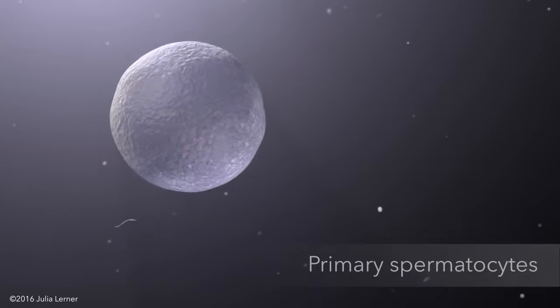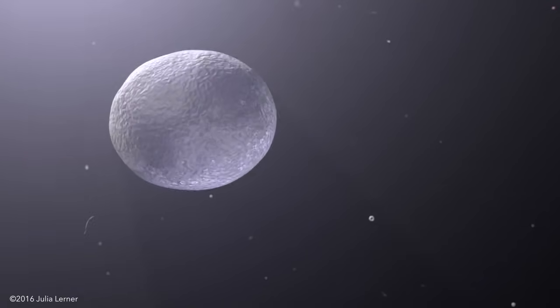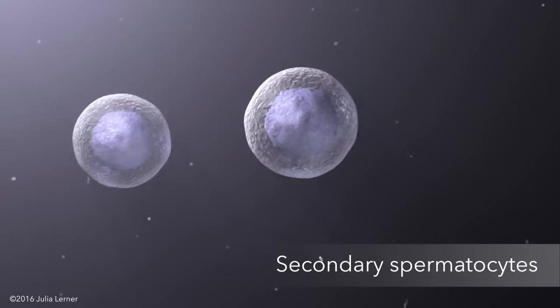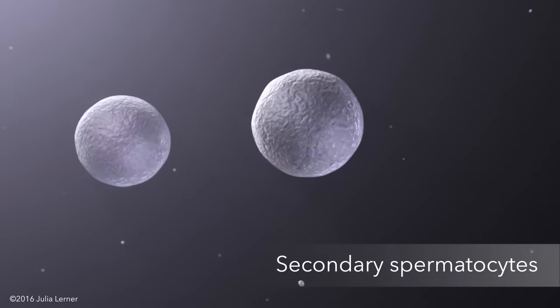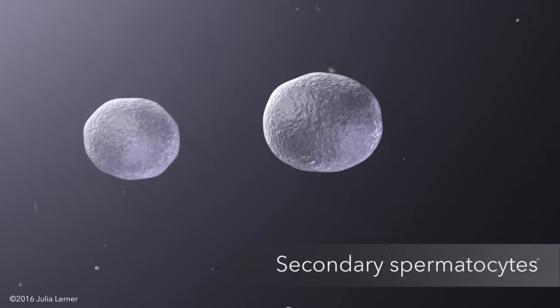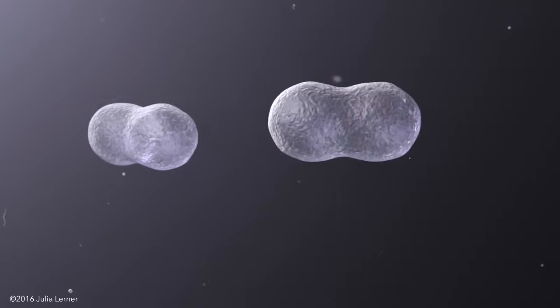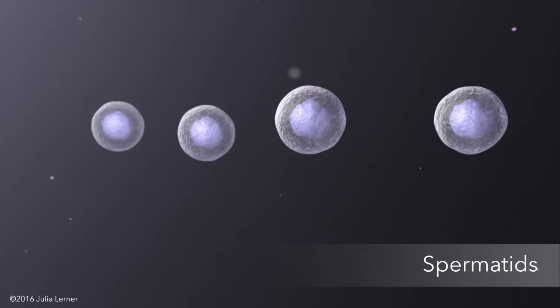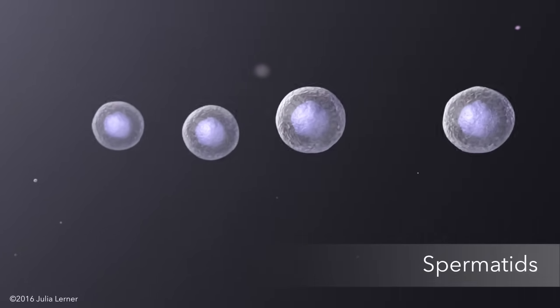Each of these primary spermatocytes undergoes a first meiotic division, forming two smaller haploid cells known as secondary spermatocytes. These secondary spermatocytes divide once more, giving rise to four haploid cells called spermatids containing exactly half of the father's genetic material.